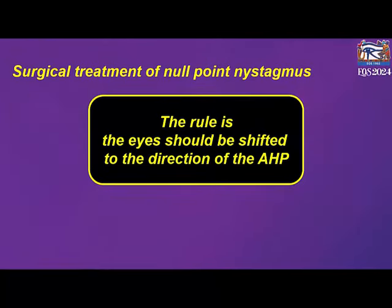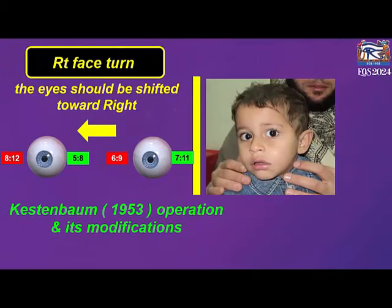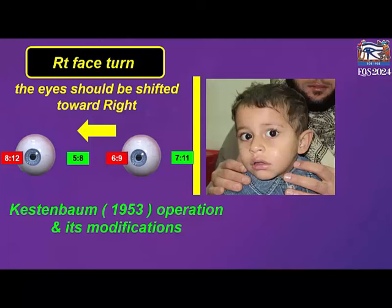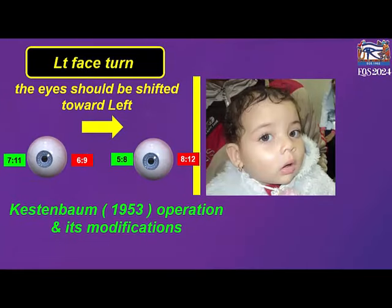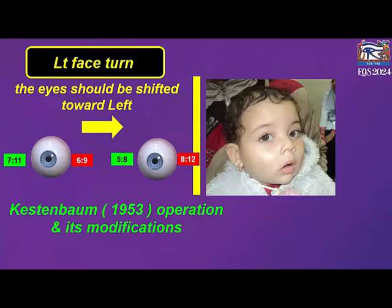The rule in surgical treatment of null point nystagmus is that the eyes should be shifted in the direction of the abnormal head posture. If there is a right face turn, the eyes should be shifted towards the right. This can be done by the Kestenbaum operation and its modifications: resection of the right lateral rectus and recession of the left lateral rectus, and resection of the right medial rectus and recession of the right lateral rectus. The opposite should be done in a left face turn — the eyes should be shifted towards the left — by resection of the right lateral rectus and recession of the left medial rectus, and resection of the right medial rectus and recession of the left lateral rectus.